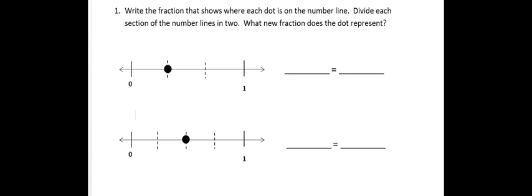The last section says to write the fraction that shows where each dot is on the number line. Then divide each section of the number lines in 2. And then we are to decide what new fraction does the dot represent. So if I look at my first number line, it's showing us from 0 to 1, so that's 1 whole. It has been divided into 3 equal pieces. So my dot would show me 1 third. So we will write that down.